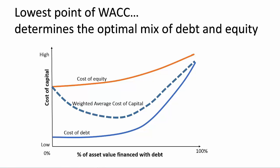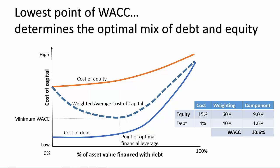This WACC is a U-shaped curve. At 100% equity, your WACC is the same as your cost of equity. As cheap debt replaces expensive equity, this is a downward sloping curve. As debt gets increasingly more expensive, the curve turns and becomes upward sloping. The lowest point on the curve represents the optimal capital structure for a firm — the ideal amount of debt that a firm should incorporate into its mix of financing instruments. WACC is an important calculation because it represents the true discount factor applied in present value analysis.